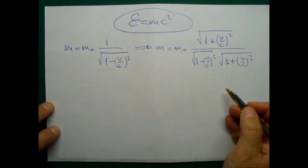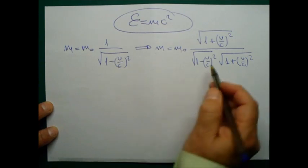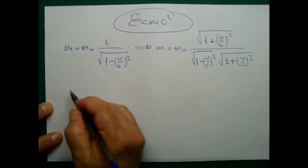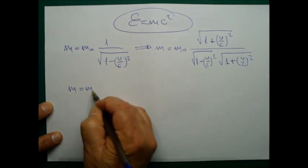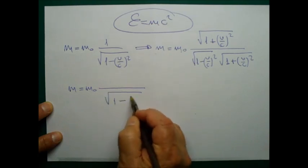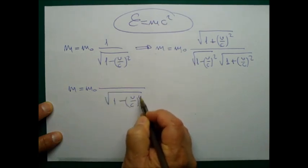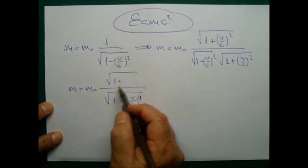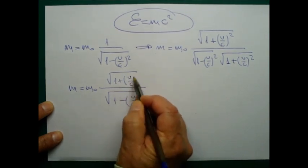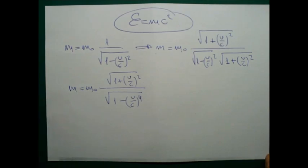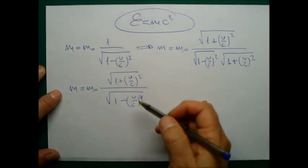Now, when I multiply these two in the denominator, I have a difference of squares in the denominator under the root, that is square root of 1 minus V over C to the power of 4. So that is M equals M₀ times the square root in the numerator, 1 plus V over C squared, and square root of 1 minus V over C to the power of 4.